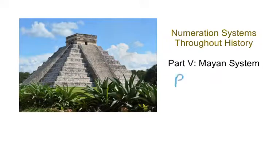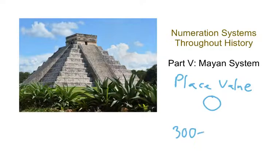It had the idea of place value, which we talked about with the Babylonians, and it had the concept of a zero. The Mayan system evolved between 300 and 900 AD, which puts it well past the time of the Babylonians. Although, again, remember, these societies had no connection with each other, no contact whatsoever. So it's still incredibly remarkable that they came up with some very similar ideas.